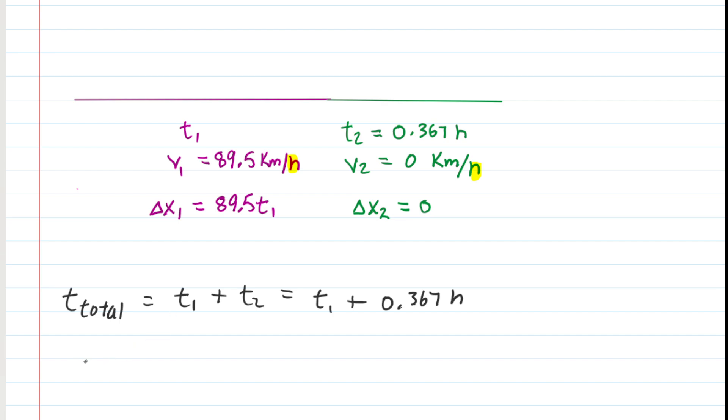Another thing that we do know is the total distance traveled. So we're going to call that delta x total. And you can see that that would be the delta x1 added to the delta x2. So we'll take delta x1, which was represented as 89.5 T1, and then add that to delta x2. But of course delta x2 was zero. So we would be adding zero and therefore we don't even need to include it.